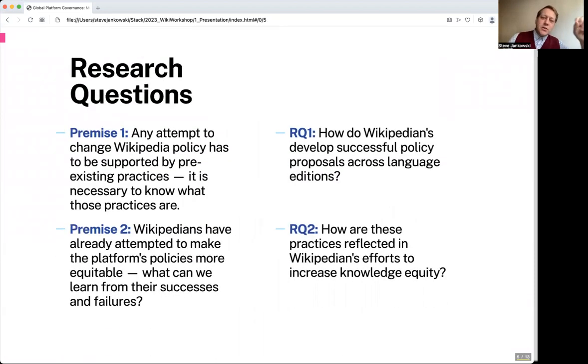Our research questions are based on two premises. First, any attempt to change Wikipedia policy has to be supported by pre-existing practices. It is necessary to know what those practices are. Wikipedia prides itself in the precedent of community practices. Second premise: Wikipedians have already attempted to make the platform's policies more equitable. What are they? What successes did they have? And which failures did they encounter?